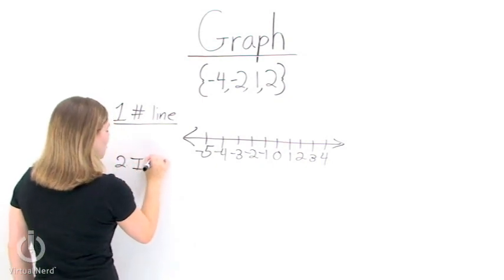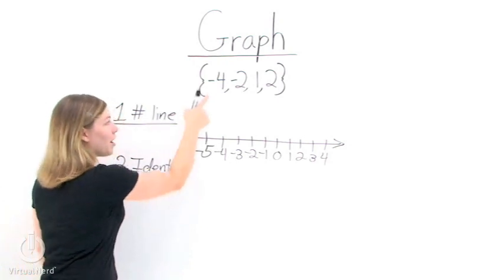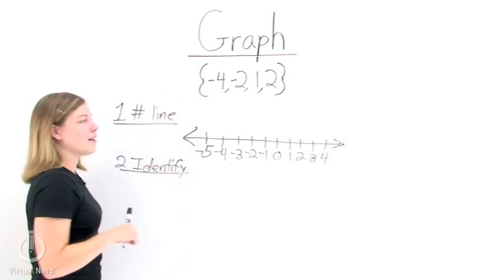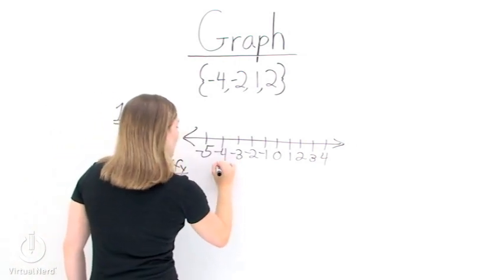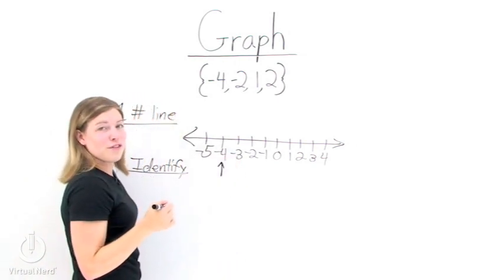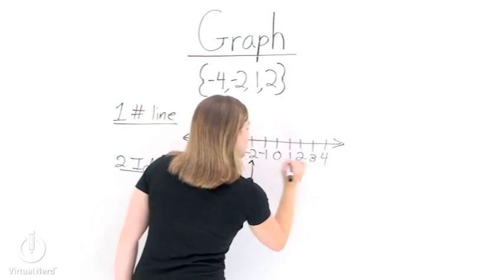Now that we have our number line, step 2 is to identify any numbers on our number line that are in our set. So look at our set. Find negative 4 on the number line, right there. Do this for all of the other numbers in the set: negative 2, 1, and 2.